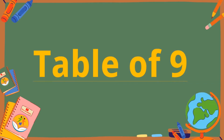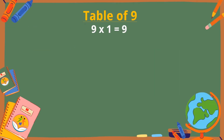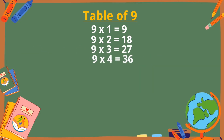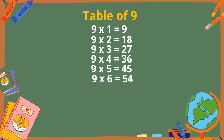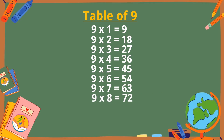Table of 9. 9×1 is 9, 9×2 is 18, 9×3 is 27, 9×4 is 36, 9×5 is 45, 9×6 is 54, 9×7 is 63, 9×8 is 72, 9×9 is 81, 9×10 is 90.